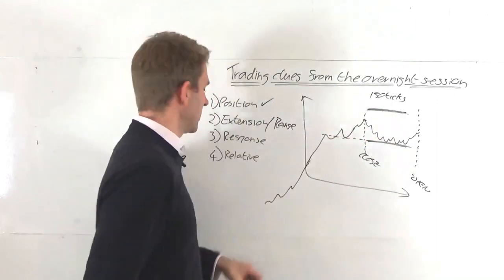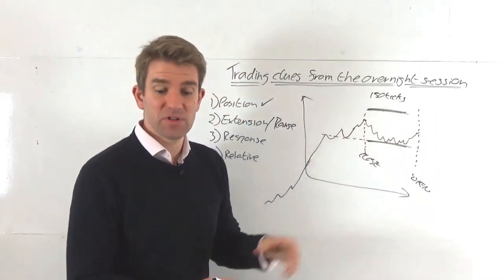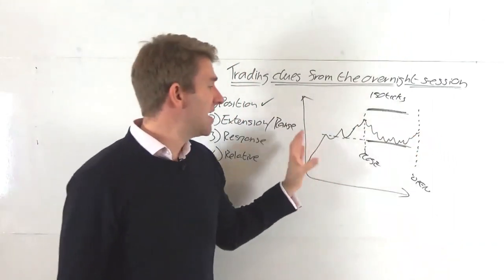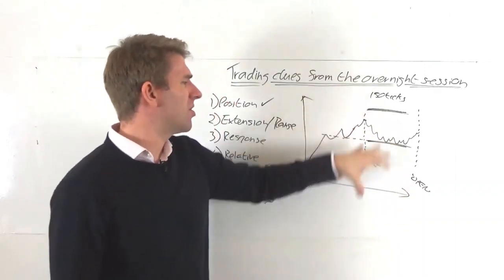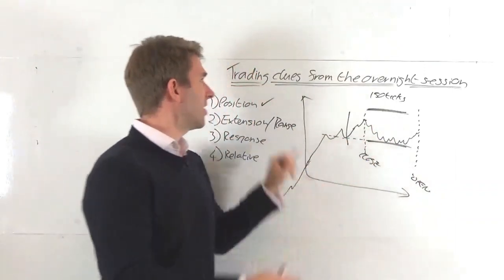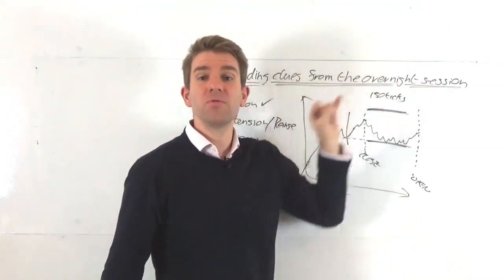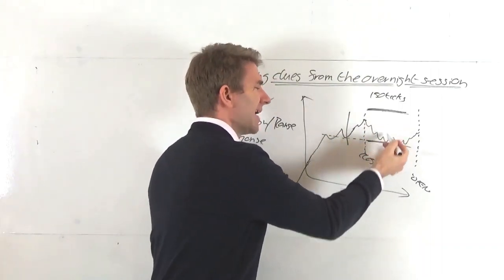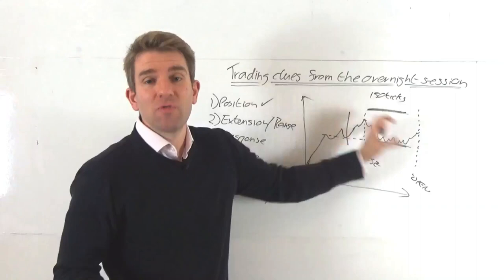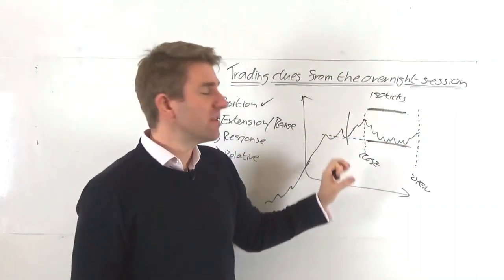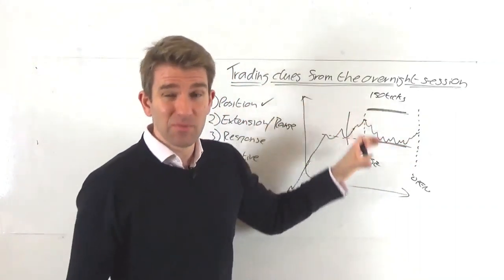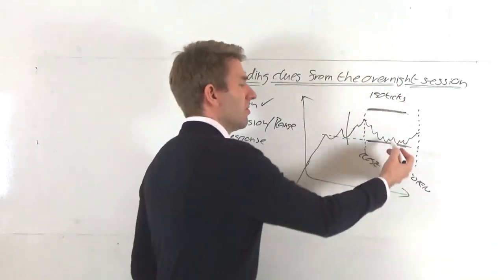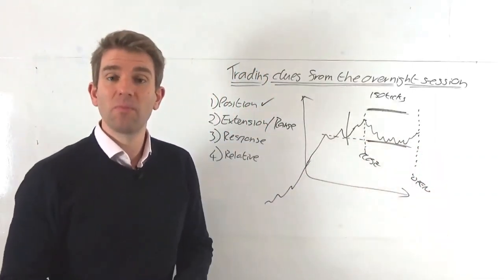If the overnight session extension is in the upper 10% relative to the prior day's trade, that's good — it means it hasn't undone all that work. Check out the trade clues from the close for more info on the final hour. If the overnight session has held the majority of the prior day's gains, we're assuming strength has continued and that buying will continue at the open. That's why we come up with overnight session support levels — we'll probably buy at that level.